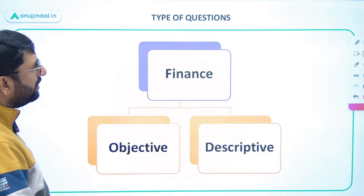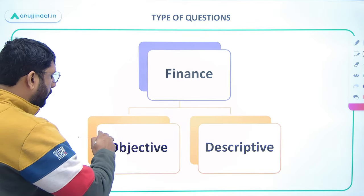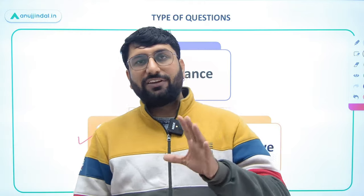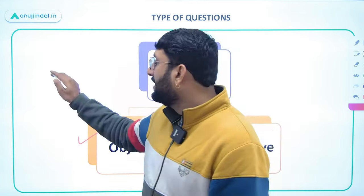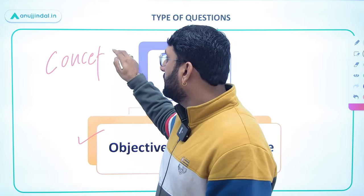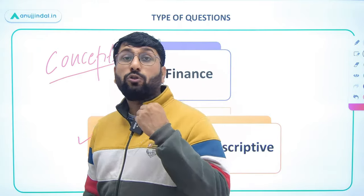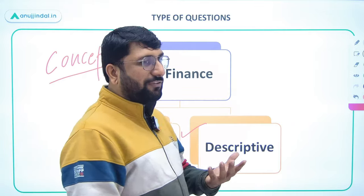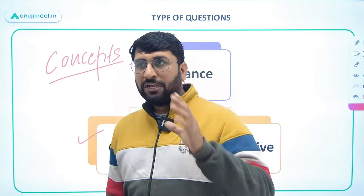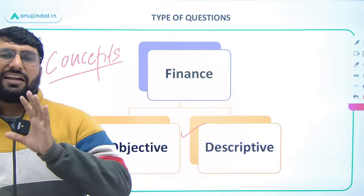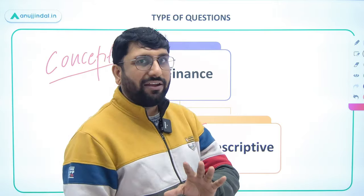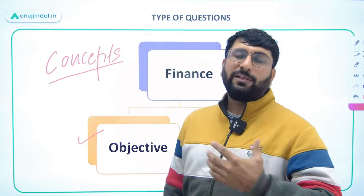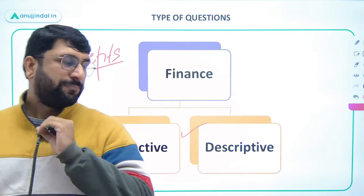Now, what types of questions are there and how do you tackle them? In finance there are two types: objective and descriptive. For objective questions, your concepts have to be very thorough — the clearer your concepts, the better you will be able to answer. If you are guessing, there is negative marking, so the first idea is to understand concepts comprehensively and then practise as many MCQs as possible. After every chapter in the course, practice questions are also provided.